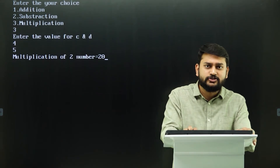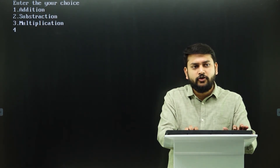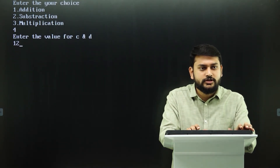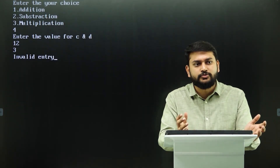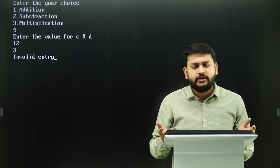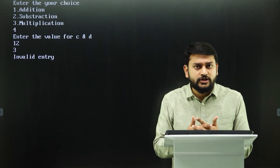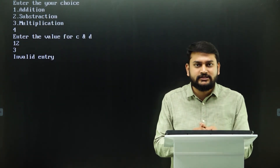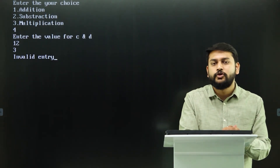Now let me show the default case. I run the program and enter option 4. It still asks me to enter values for c and d — that's a problem. I enter 12 and 3, and it says 'invalid entry'. However, the issue is it shouldn't ask for values when the option is invalid. That can be fixed by moving the scanf inside each case.